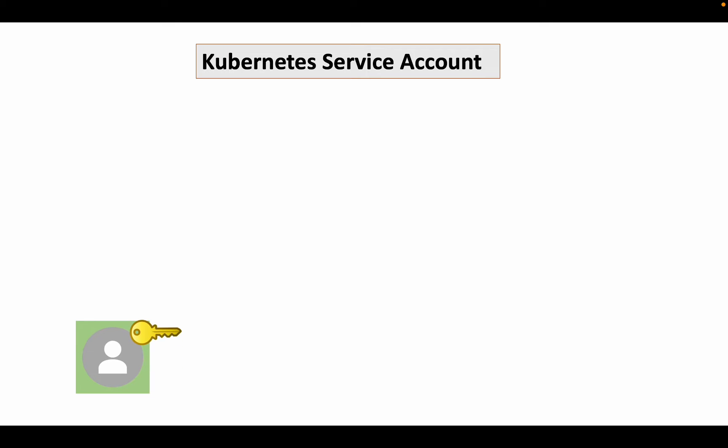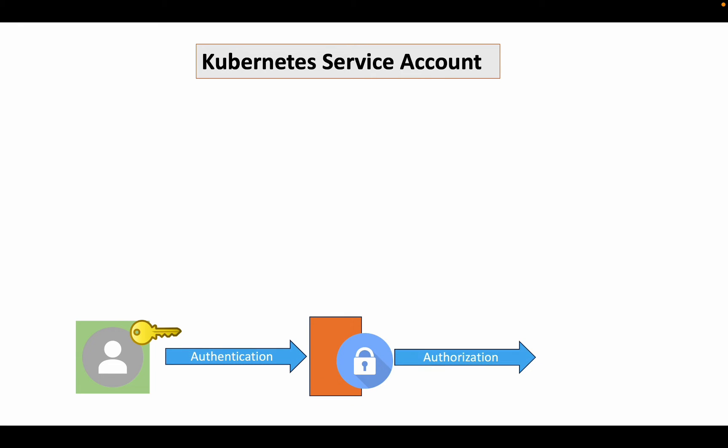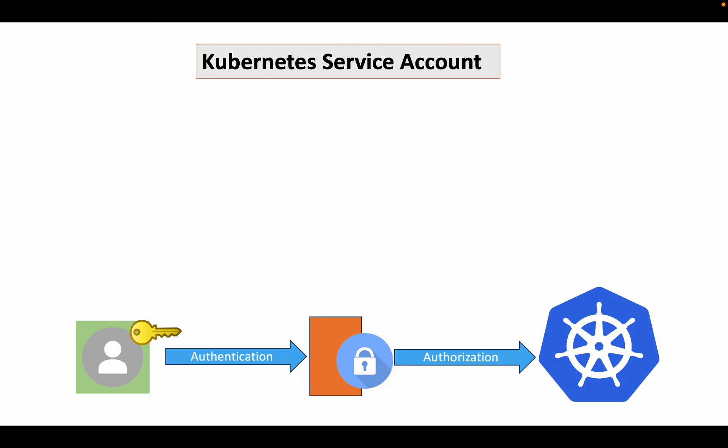When a user tries to access the Kubernetes resources, the user will go through an authentication and authorization process. Authentication checks who we are and provides permission to log into the system. Authorization checks whether we have the right permission to access the requested resources.